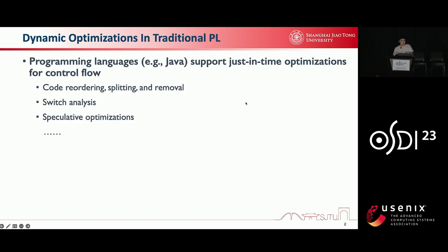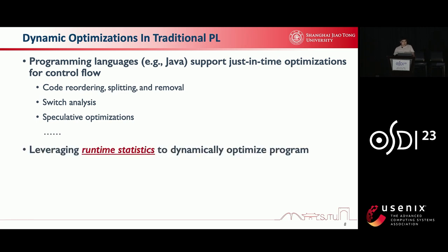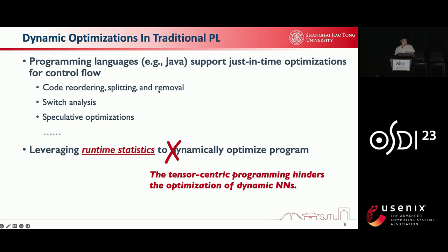In order to optimize these dynamic neural networks, we try to first learn from dynamic optimizations in traditional programming languages, like Java. These compilers can support just-in-time optimizations for control flow — for example, code reordering, splitting and removal, switch analysis, and some speculative optimizations. These language compilers collect long-time statistics and analyze them for optimization. However, we found out that for dynamic neural networks, the tensor-centric programming in existing frameworks like PyTorch hinders similar dynamic optimizations.